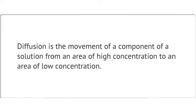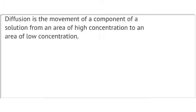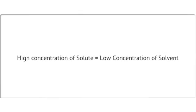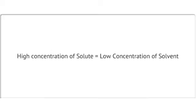The next property of a liquid or gas is diffusion. Diffusion is the movement of a component of a solution from an area of high concentration to an area of low concentration. Concentration is a ratio between the amount of a substance present divided by the volume. This can often be thought of as a ratio comparing the amount of solute divided by the amount of solvent. If there is a high concentration of solute, then there is a low concentration of solvent in that area, and vice versa. When an item is first added to a solution, it will be in a higher concentration where it was added compared to the rest of the solution. That substance will move to evenly distribute itself through the solution. This is diffusion.